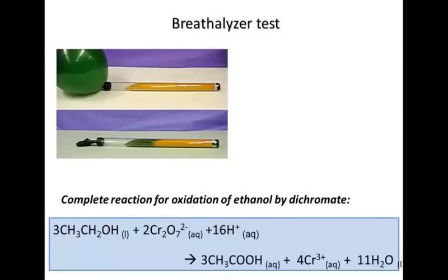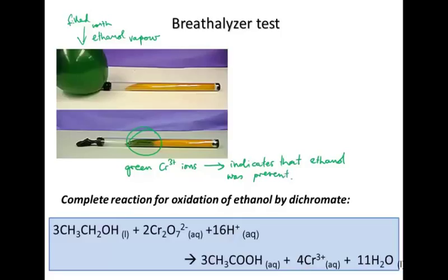These pictures here show a balloon filled with ethanol vapor, and they squeeze the ethanol vapor into the test tube. You can see here the yellow-orange dichromate crystals have been reduced to the green chromium three ions, which indicates that ethanol was present. This is just the same reaction we had on the previous page - the oxidation of ethanol by dichromate. This works for other alcohols as well, but this particular breathalyzer test was obviously for the presence of ethanol.